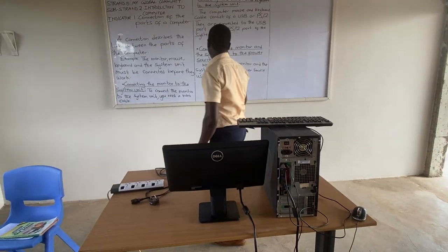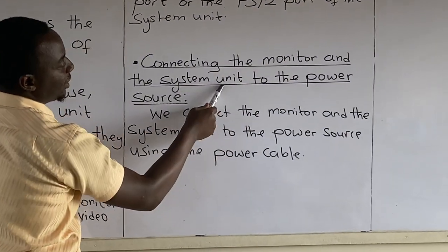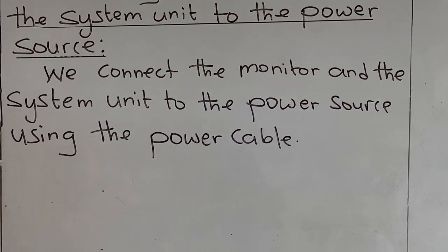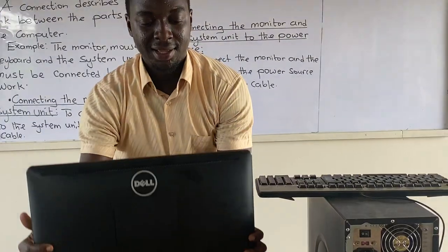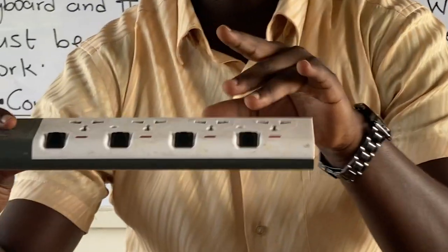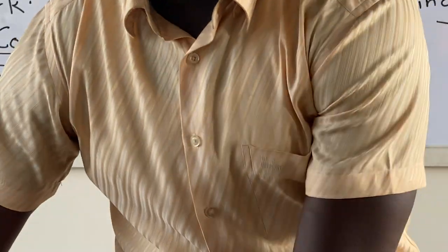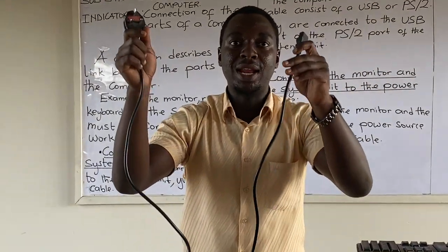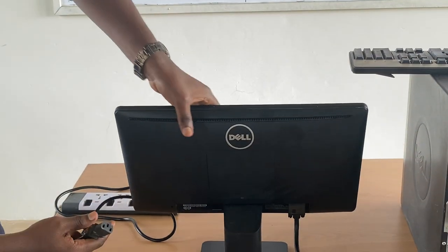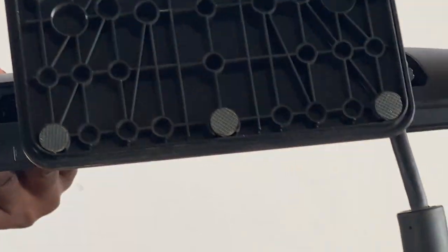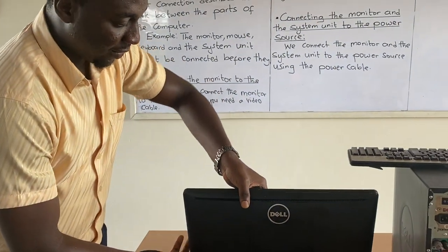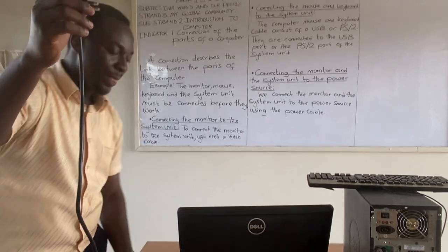Let's go to the last part: connecting the monitor and the system unit to the power source. We connect them using the power cable. We will connect the power cable to the monitor, then plug it into the power source. There is a part on the monitor where you connect the power cable. I have connected my power cable, and this end is being connected to the power source.